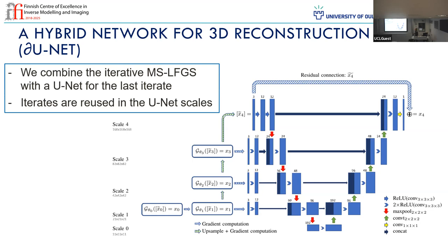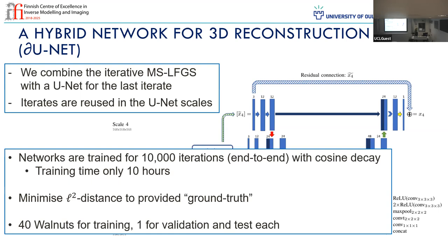We were able to train this whole thing in 10,000 iterations, only taking 10 hours for model-based iterative reconstruction in 3D. I probably would have wanted to iterate a bit longer, but it gave us nice results already at that time. We minimized the L2 distance, and we used 40 walnuts for training — one for validation and one for testing. There's not much left after that.